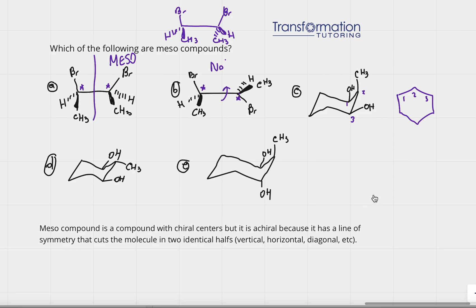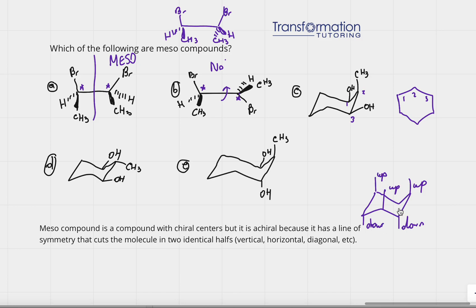A quick overview of chair orientation: in a chair, positions alternate up and down. Each position has a partner that is opposite — if one is up, the axial partner at the same carbon is down, and so on around the ring.